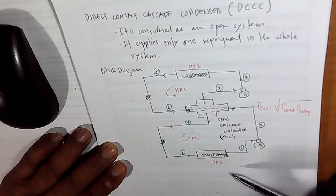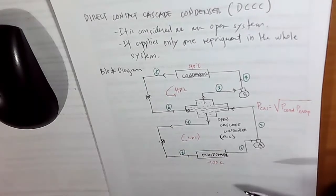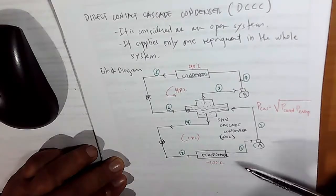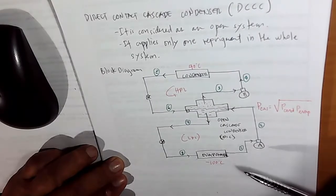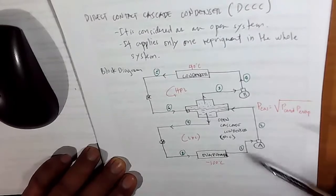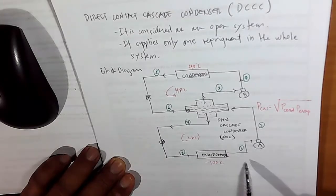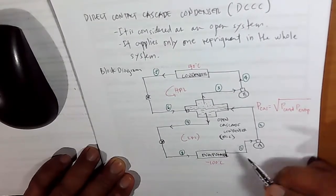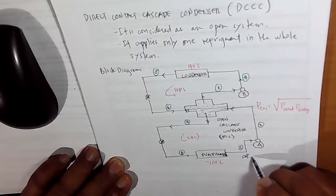However, we are adjusting to negative 100 degrees Celsius, but because we don't have available data in your table and chart, this 100 degrees Celsius is adjusted to negative 40, which is the minimum temperature that you can find in your table, so that we can perform these activities. This is Activity Number 13: Direct Contact Cascade Condenser Refrigeration System. Let us consider this as your low pressure loop and the other one as the high pressure loop. At point 1, it is considered saturated vapor refrigerant.